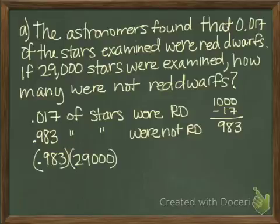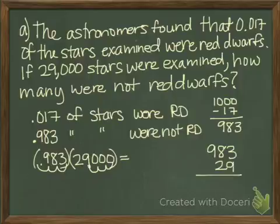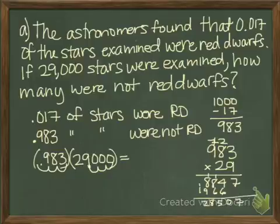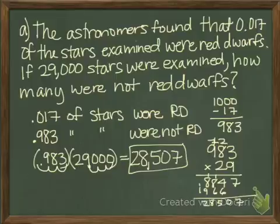983 thousandths of 29,000 is going to equal how many were not red dwarfs. So since we have 983 thousandths, we'll multiply it by 1000. Since 29,000 is right next to it, we'll divide by 1000. So we end up getting 983 times 29, and we end up having 28,507 stars that were not red dwarfs.